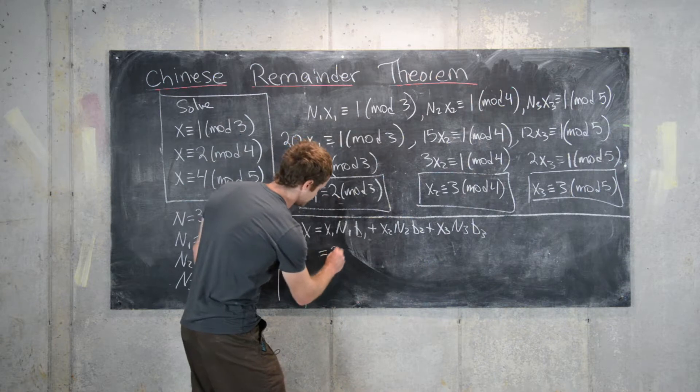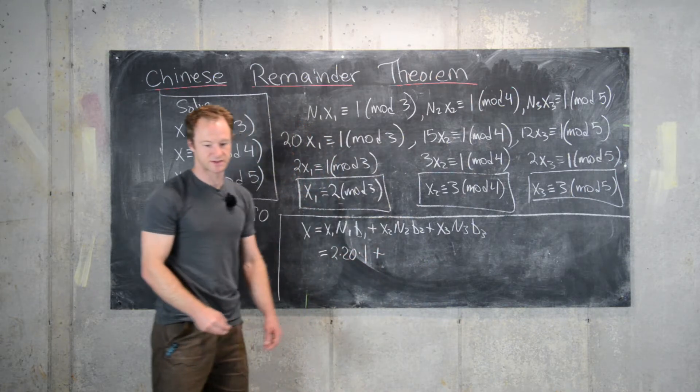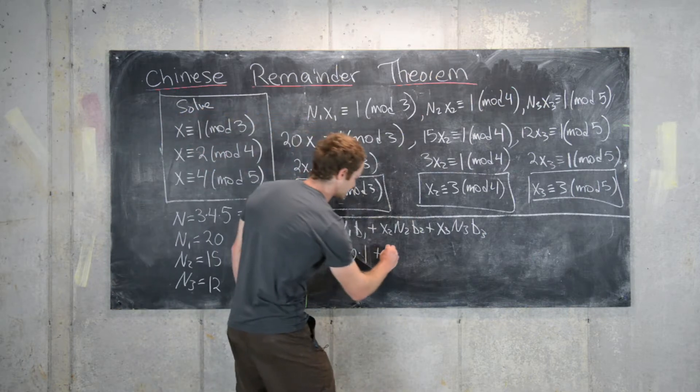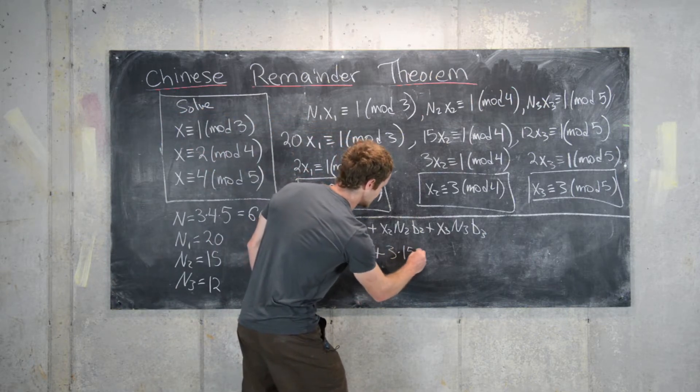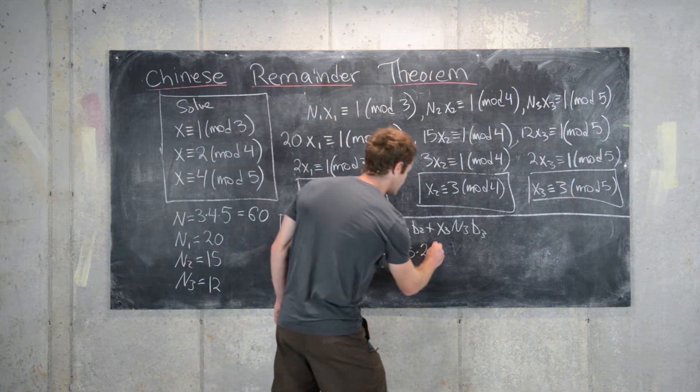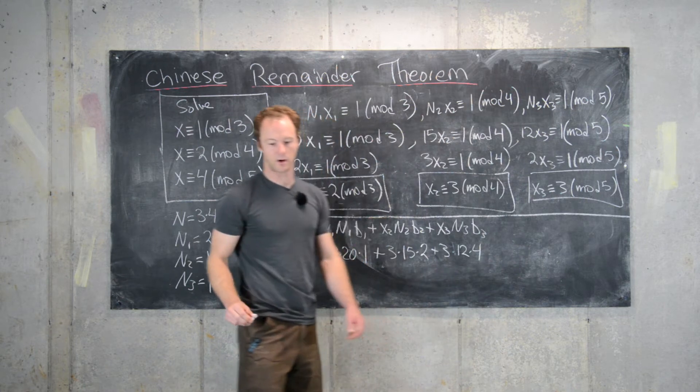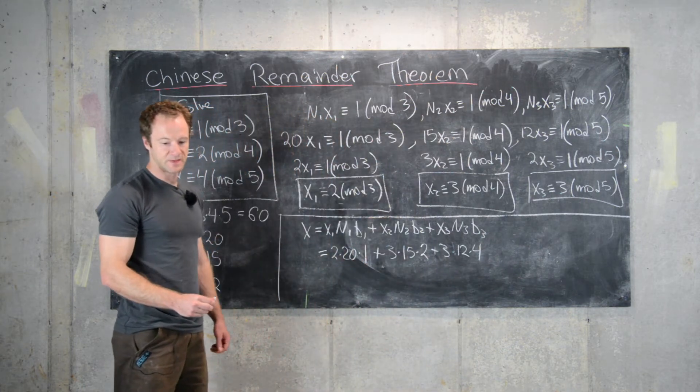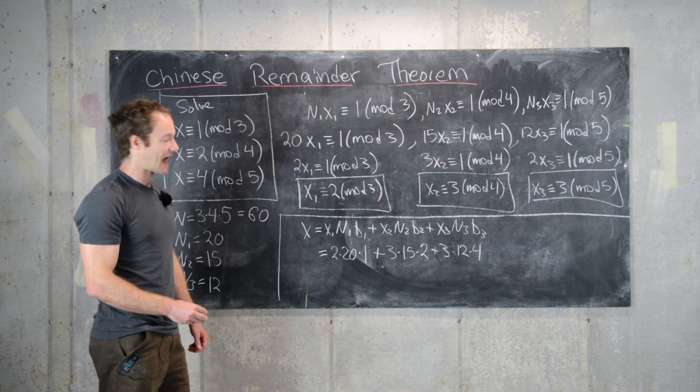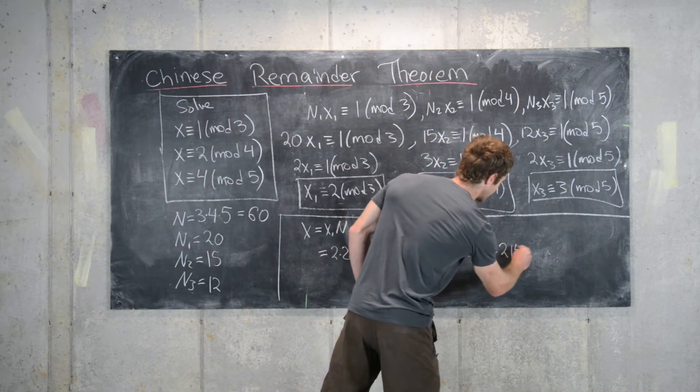So let's see what that will give us. That will give us 2 times 20 times 1 plus 3 times 15 times 2 plus 3 times 12 times 4. Now we can add all of that up, and we'll notice that that's equal to 214.